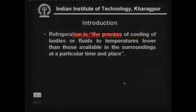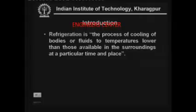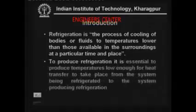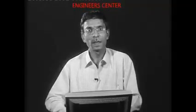Let us start with an introduction. As you know, in the very first class we defined refrigeration as the process of cooling of bodies or fluids to temperatures lower than those available in the surroundings at a particular time and place. Here the important thing is: to produce refrigeration, it is essential to produce temperatures low enough for heat transfer to take place from the system being refrigerated to the system producing refrigeration. If we want to produce refrigeration in system A, we have to take out heat from system A, meaning we must have another system B whose temperature is lower than system A, so that heat can flow.